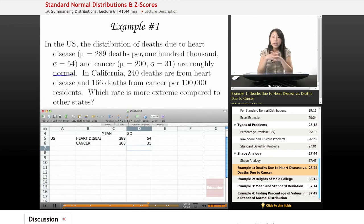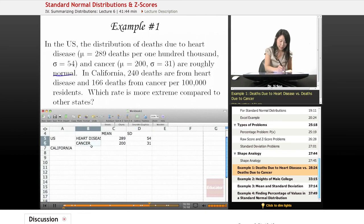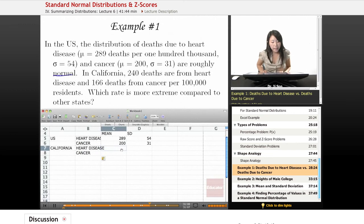One way we could do that is by using Z-scores, because Z-scores will give you the distance in terms of standard deviation. And because these two populations have very different standard deviations, that's worth knowing. And so here's California, heart disease and cancer. In California, the mean is 240 and 166. And what we might want to know is the Z-score.